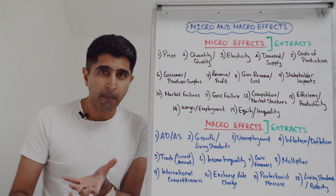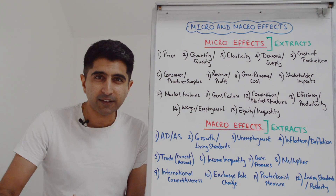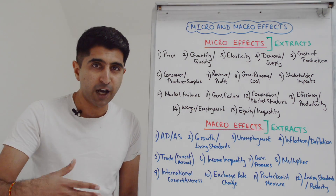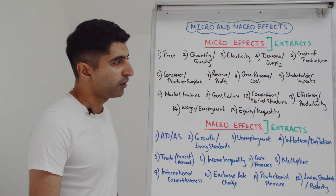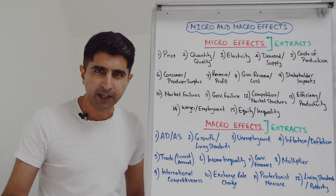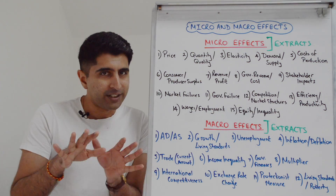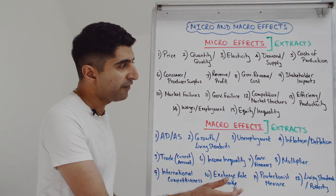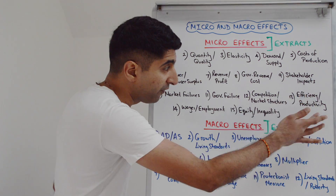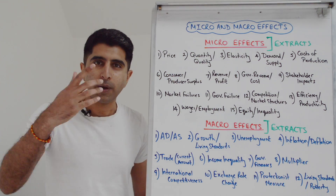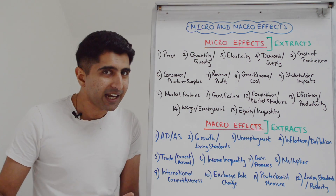The next two link to market failure — again, very clearly studied in the micro part of the course. So anything that results in a market failure or a type of market failure occurring is a micro effect, and anything that results in a government failure is a micro effect too. The next two link to market structures, studied in year two micro. If something increases or decreases competition, or results in a market structure forming or developing, that's a micro effect. We can also look at efficiency within those market structures — an increase or decrease in allocative, productive, or dynamic efficiency are clearly micro effects.